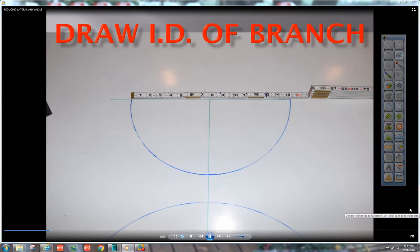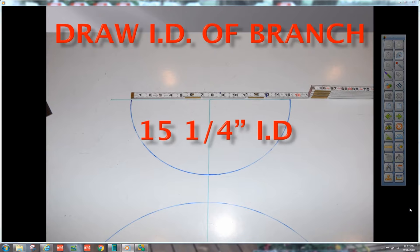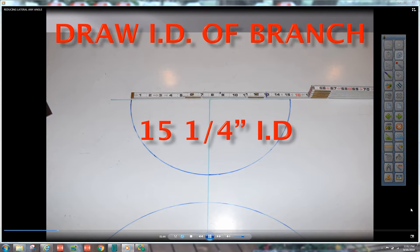Draw the ID of the branch. 15 and a quarter because it was 16 inch OD pipe with a 375 wall thickness. That's perpendicular over the 24 inch.